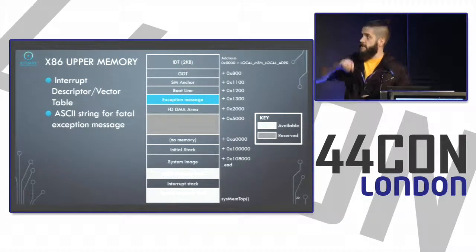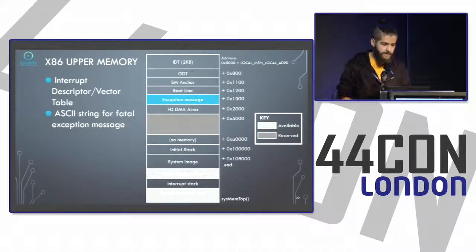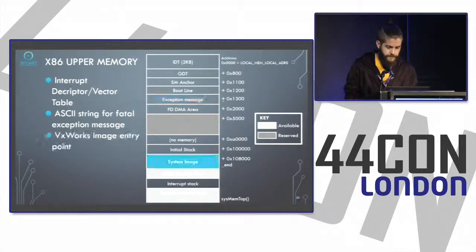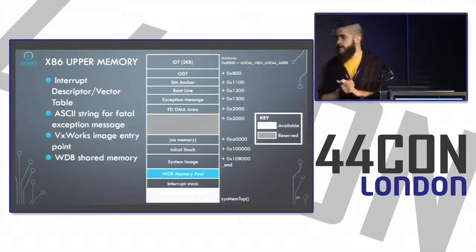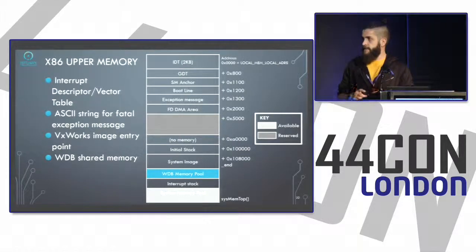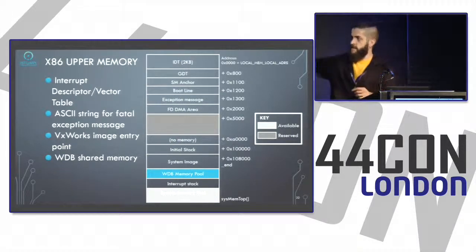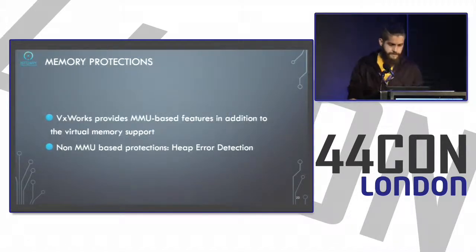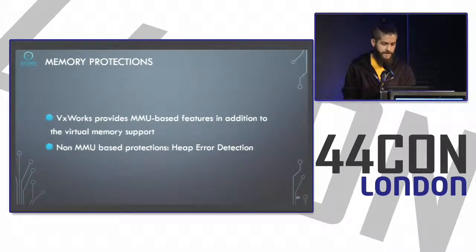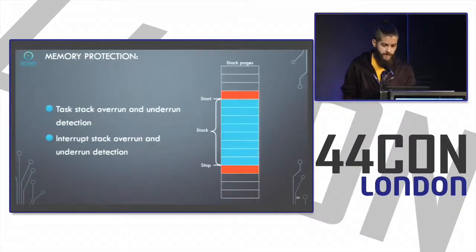When an exception occurs on VxWorks, it will display a message regarding the severity of the error, and some of those messages are stored in a specific memory area. Highlighted in green, you can see the entry points of the VxWorks OS. The WDB protocol has a specificity — it shares a particular area of memory with every task and every process on the VxWorks OS.